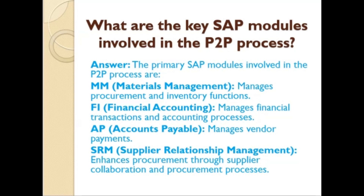What are the key SAP modules involved in the P2P process? The primary SAP modules involved are: MM (Materials Management) — manages procurement and inventory functions; FI (Financial Accounting) — manages financial transactions and accounting processes; AP (Accounts Payable) — manages vendor payments; SRM (Supplier Relationship Management) — enhances procurement through supplier collaboration and procurement processes.